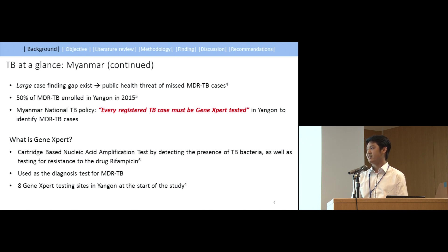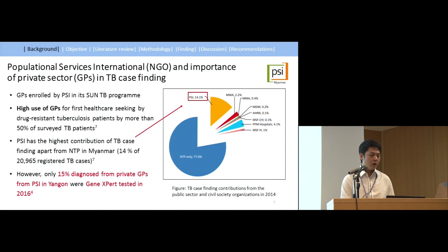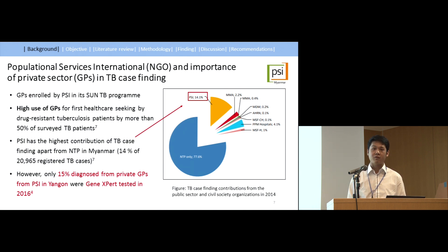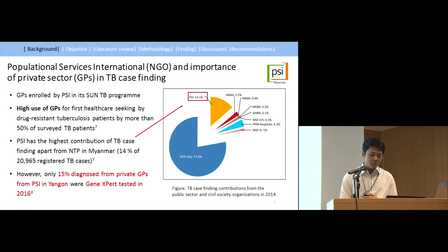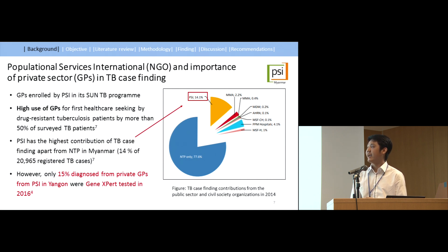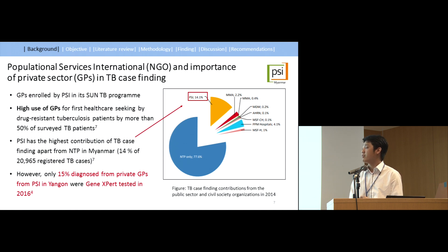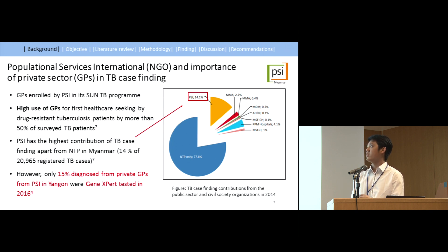There are currently eight GeneXpert testing sites in Yangon. My main research was done at the NGO called Population Services International (PSI), one of the largest NGOs in the country with a network of over 1,300 TB practitioners enrolled in its Sun-TB program. A study in 2014 showed that more than 50% of patients' primary contact for healthcare is the GP. PSI has the highest contribution after the National TB Program — 14% versus 77.6% — making it the second largest contributor in TB case finding. My study area was in PSI.